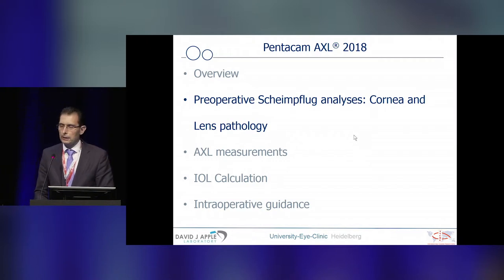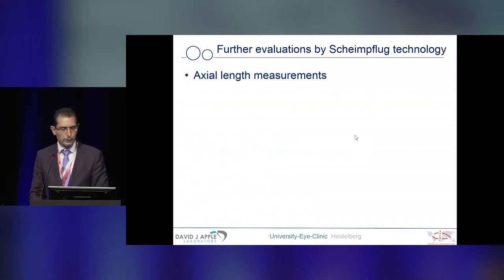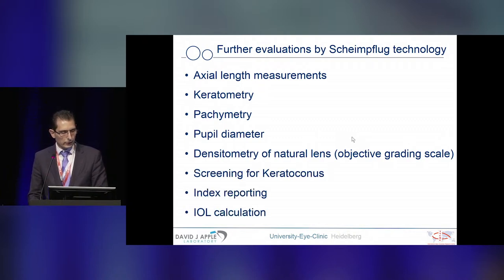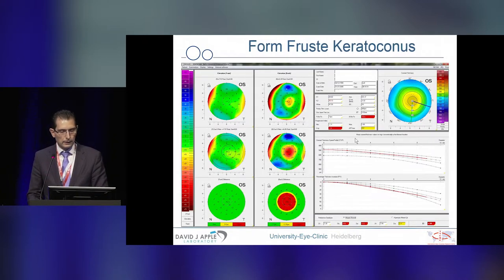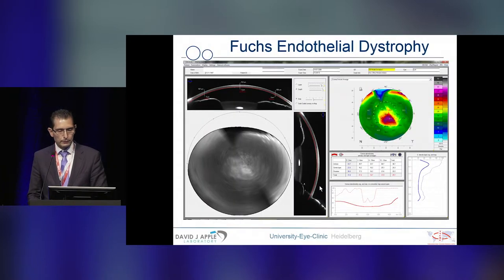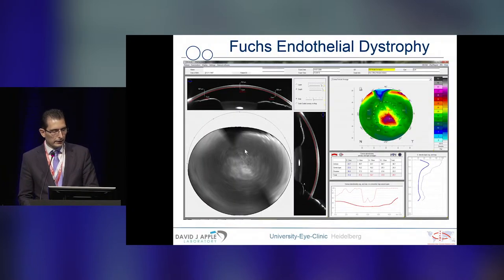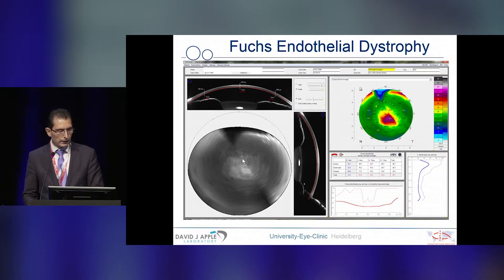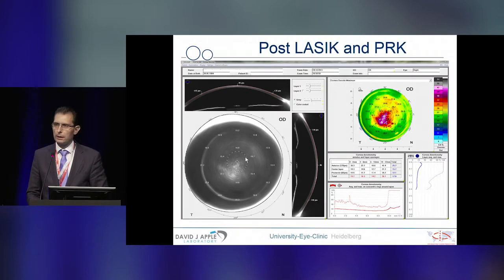The preoperative Scheimpflug analysis includes the cornea and lens pathology. To show you some clinical data: we use it to exclude forme fruste keratoconus, posterior corneal changes, or Fuchs endothelial cell disease. You can nicely see the densitometry map evaluated by the machine to assess the amount of corneal cloudiness. Even if the patient underwent prior cataract surgery, LASIK, or other corneal refractive reshapings, you can see this clearly in the overview.